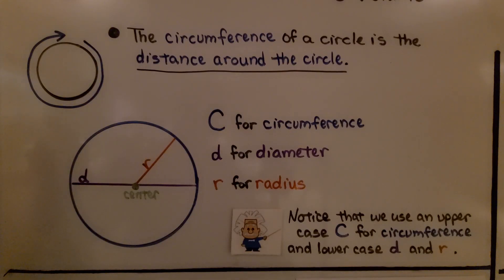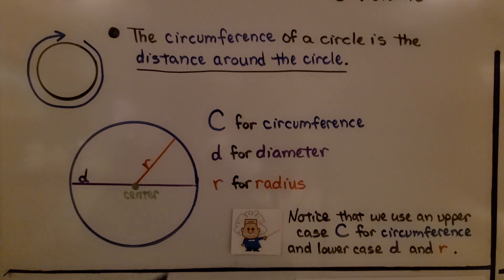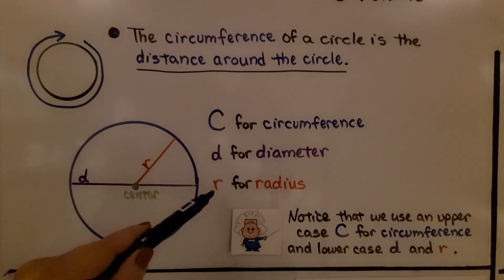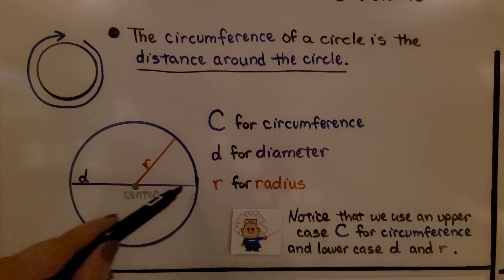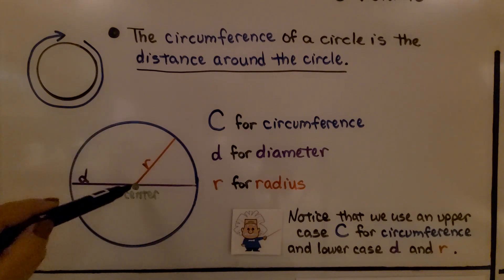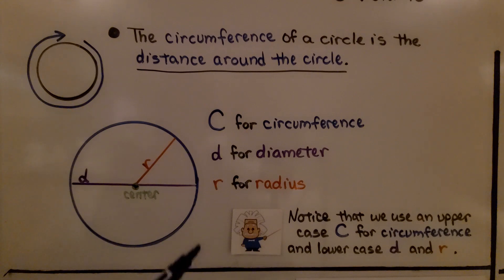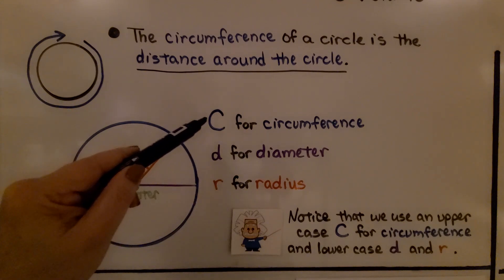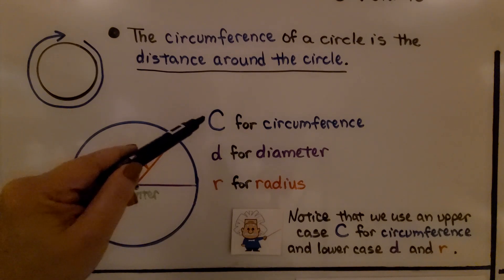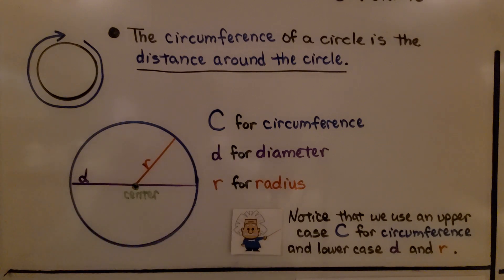The circumference of a circle is the distance around the circle. We use a capital C for circumference, a lowercase d for diameter, and a lowercase r for radius. Here's our diameter, here's our circumference, here's our radius, and here's the center — it's the very middle. Notice that we use an uppercase C for circumference, a lowercase d for diameter, and a lowercase r for radius.